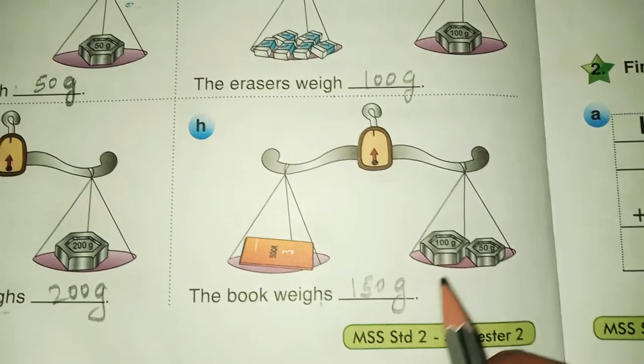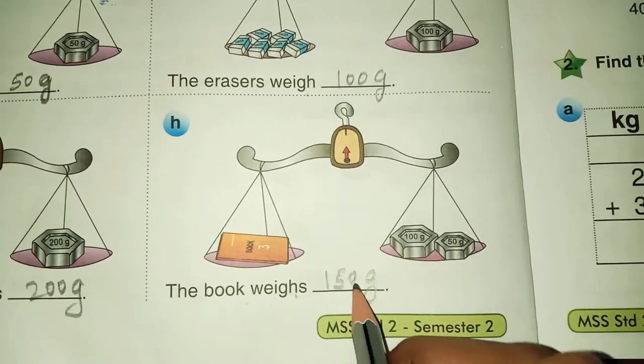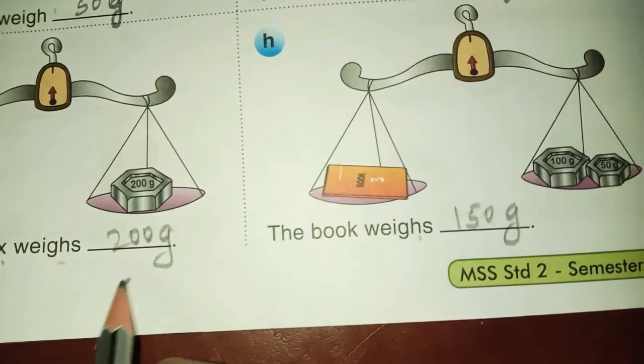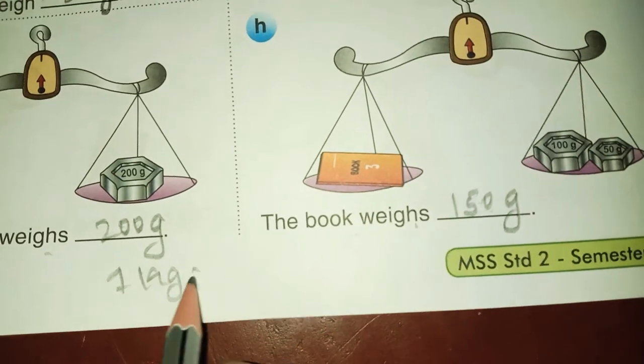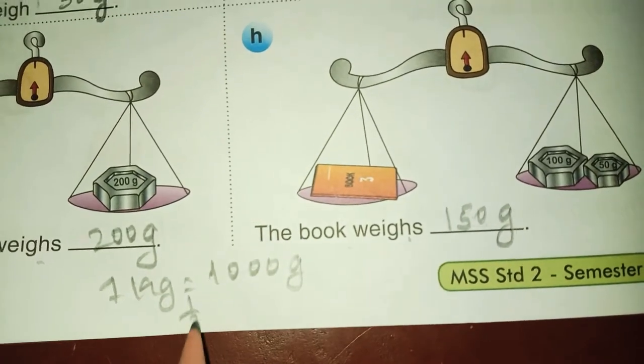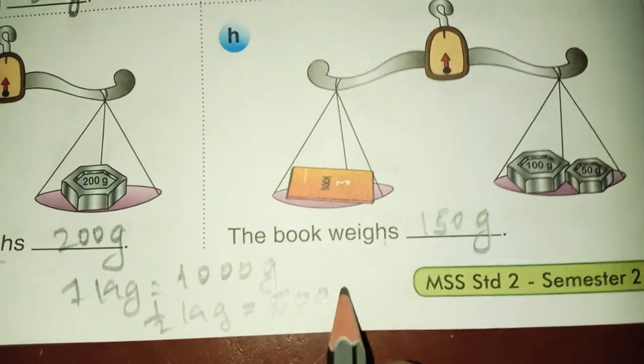These are in the grams. Therefore, you have to add these two grams. 100 plus 50, 150 gram. Keep in mind always 1 kg is equal to 1000 gram. Half kg is equal to 500 gram.